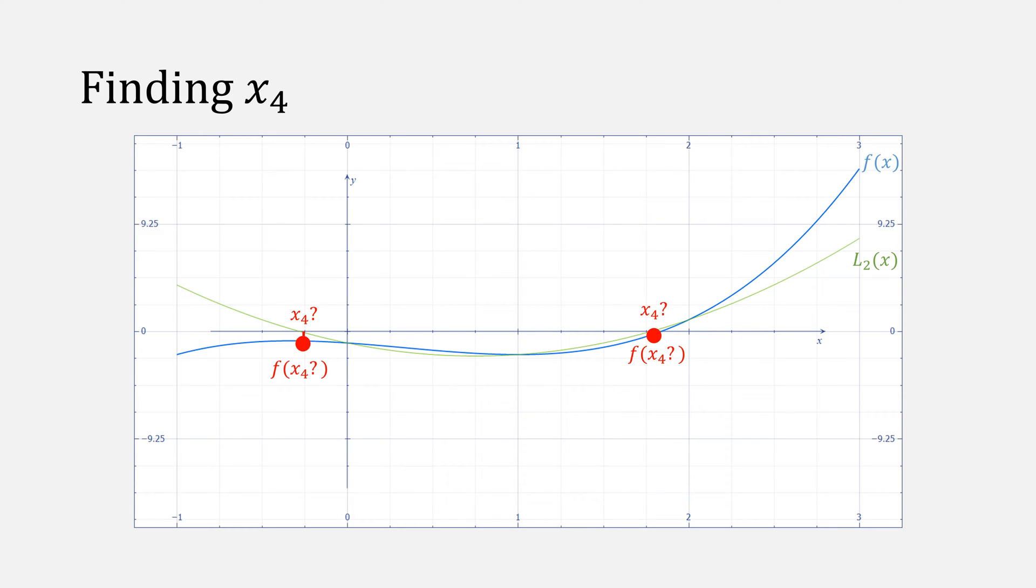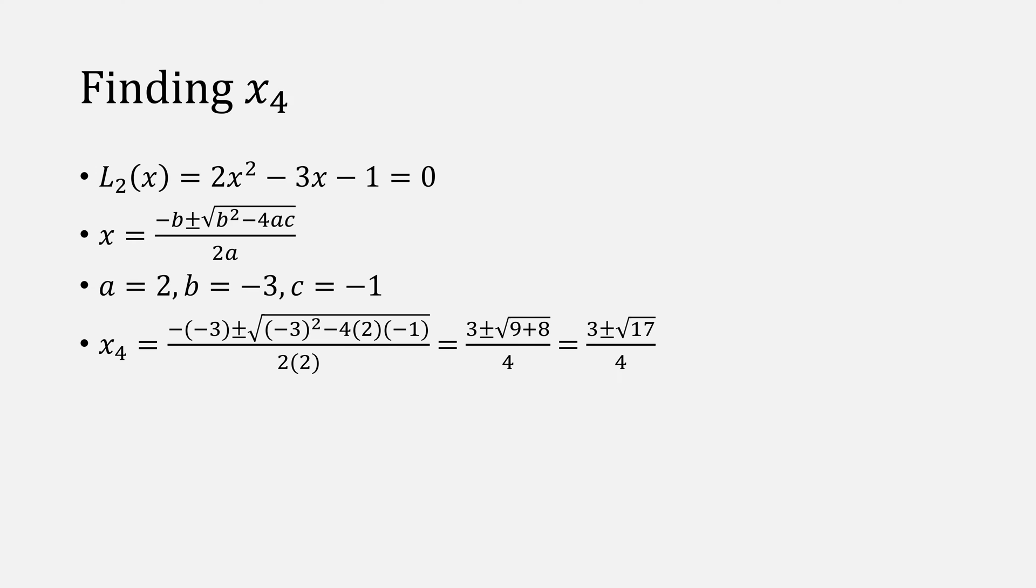Now we need to test the x-intercepts of our Lagrange function, about how we find those. To find the roots of our function 2x squared minus 3x minus 1, we can use the quadratic equation. Plug in our values of a, b, and c, and we get this result for x4, which is actually two numbers.